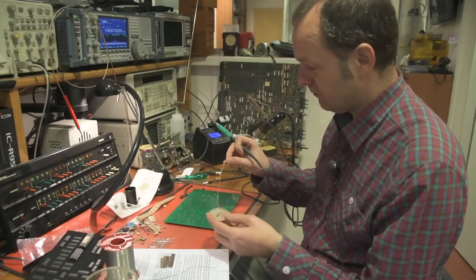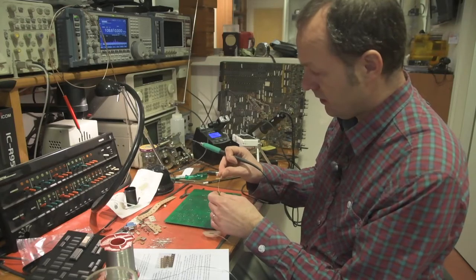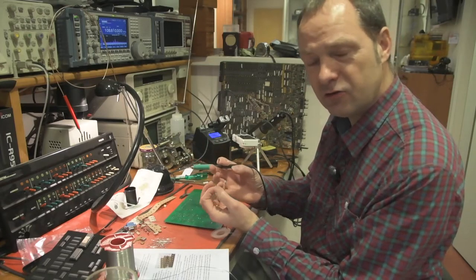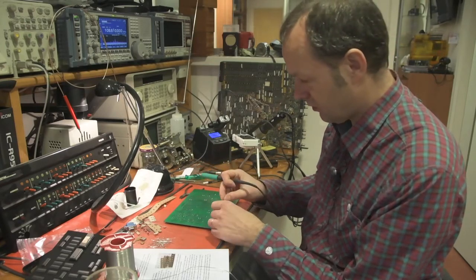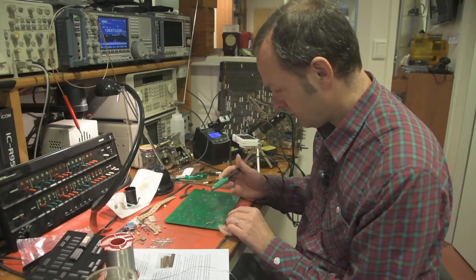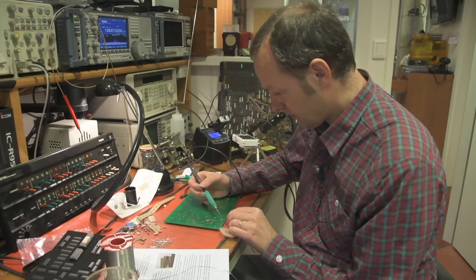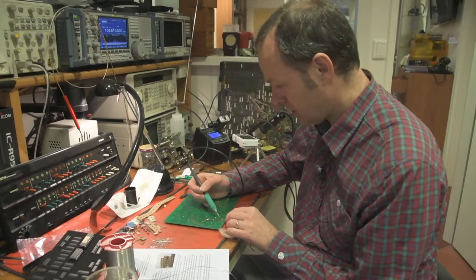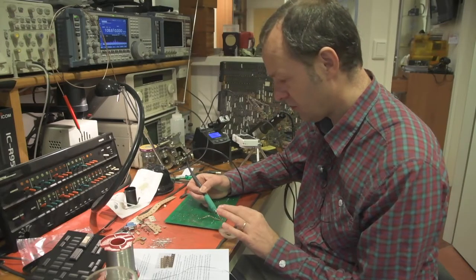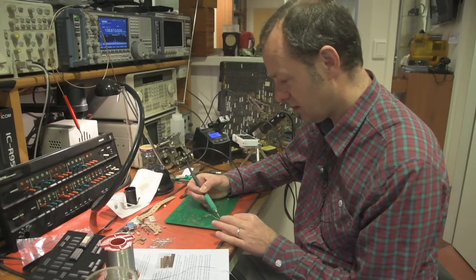So there is this solder braid. It's copper wire and it will suck up the excess solder. So I need to place it on a joint, heat it and the solder will be absorbed. Be careful because this is metal and it will get hot.